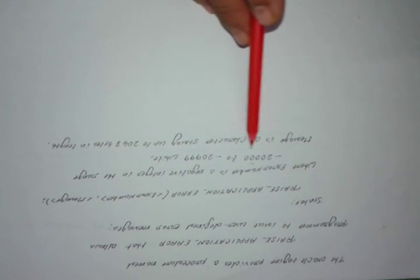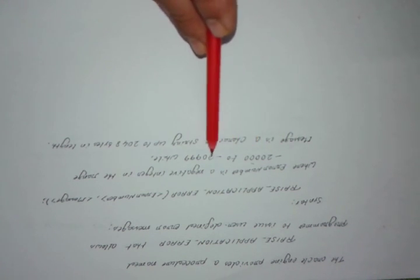Now for a statement-level trigger example, a specific operation cannot be done on a specific day. Here we use RAISE_APPLICATION_ERROR — if the new salary value (:NEW.sal) is less than the old value (:OLD.sal), then RAISE_APPLICATION_ERROR is called. This is a procedure that allows the programmer to issue user-defined error messages. The error number starts with a negative number from -20000 to -20999, and the message can contain up to 2048 bytes.